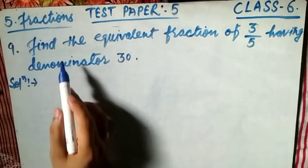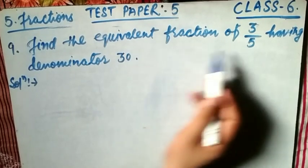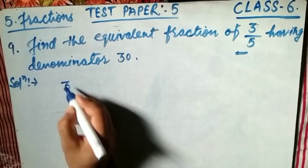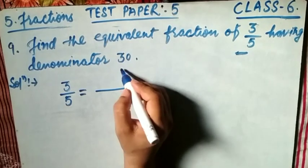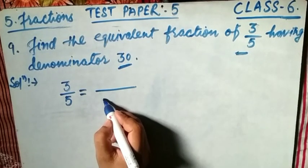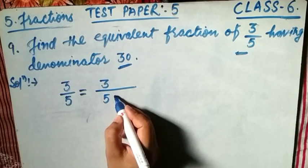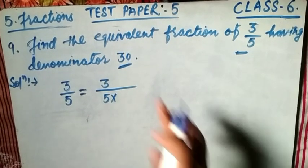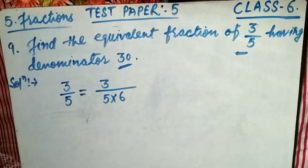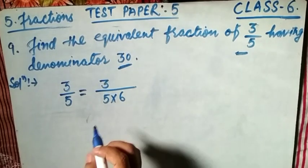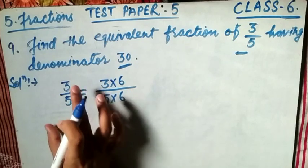Next, Question 9: find the equivalent fraction of 3/5 having denominator 30. Write the given fraction: 3/5. The denominator should be 30. So we keep 5 as it is, and ask: what number multiplied by 5 gives 30? That number is 6. So we multiply both numerator and denominator by 6.